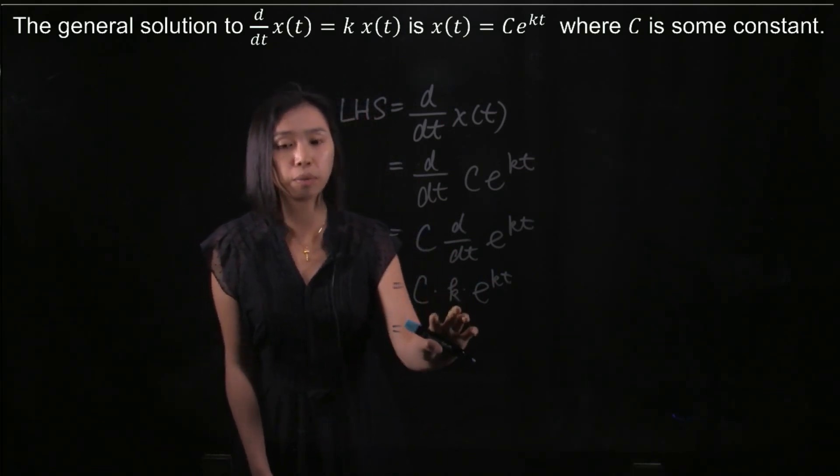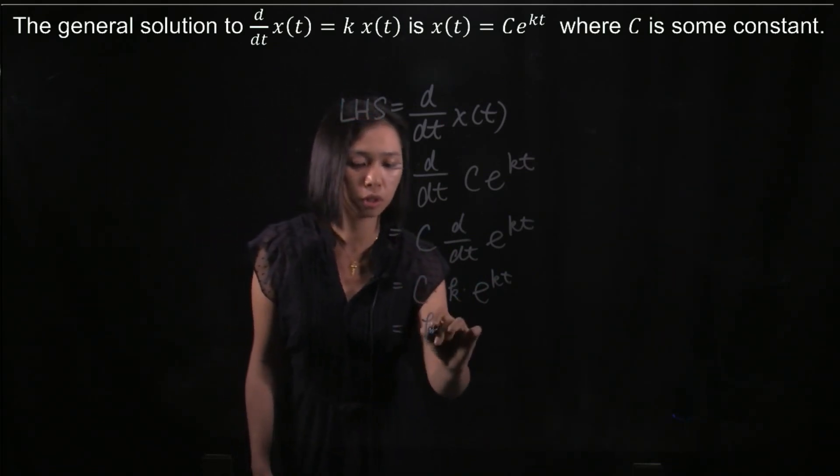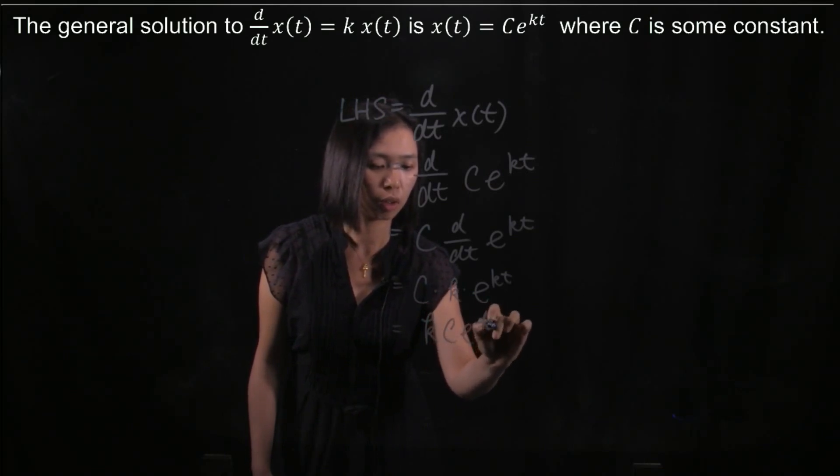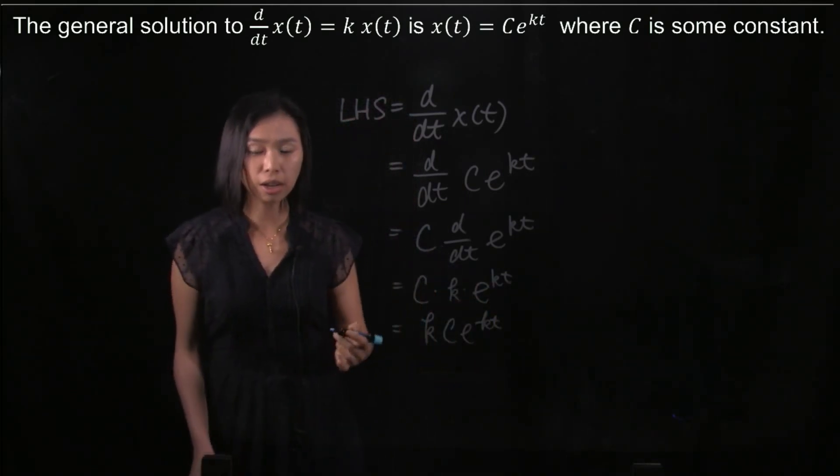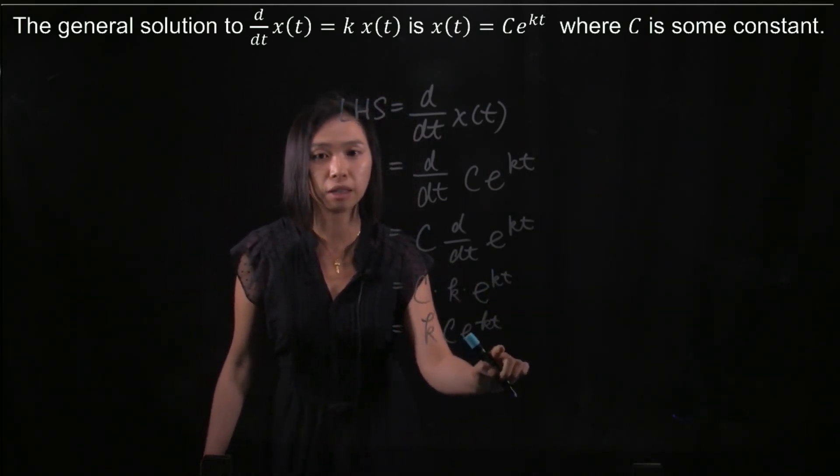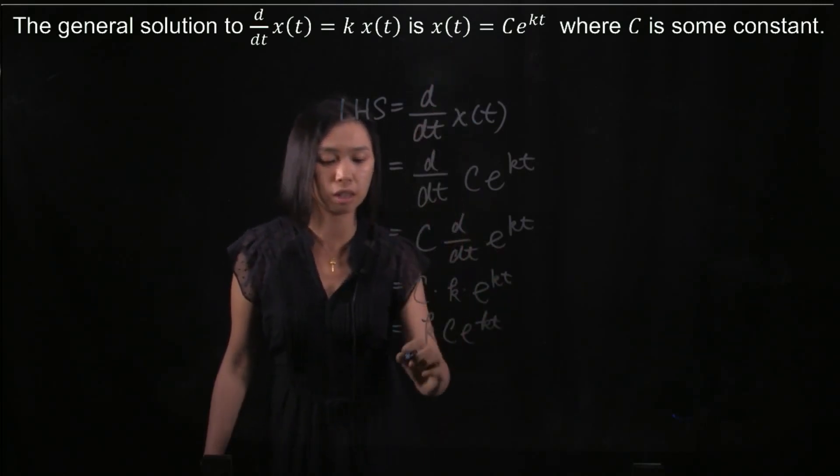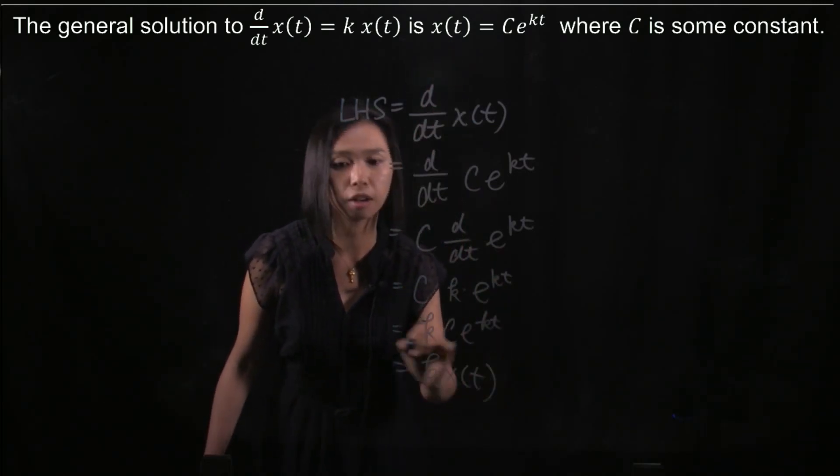We can swap these terms because they're numbers. Then we realize that Ce^(kt) is actually x(t), so we get kx(t).